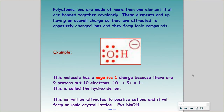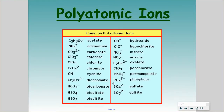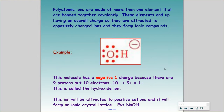Polyatomic ions are made up of more than one element bonded covalently, meaning they're bonded like molecular compounds. These elements end up having an overall negative charge, so they're attracted to the oppositely charged ions. There is one exception we will work with — ammonium — which is positive, so it is attracted to a negative ion instead. But for most polyatomic ions, the charge is negative, and they end up forming an ionic compound.